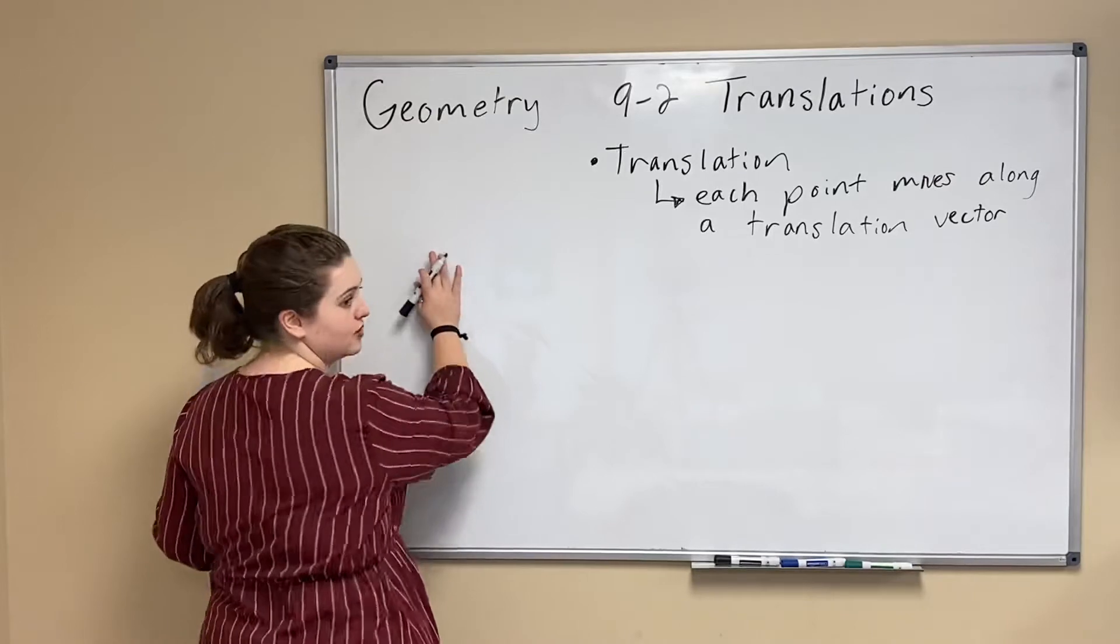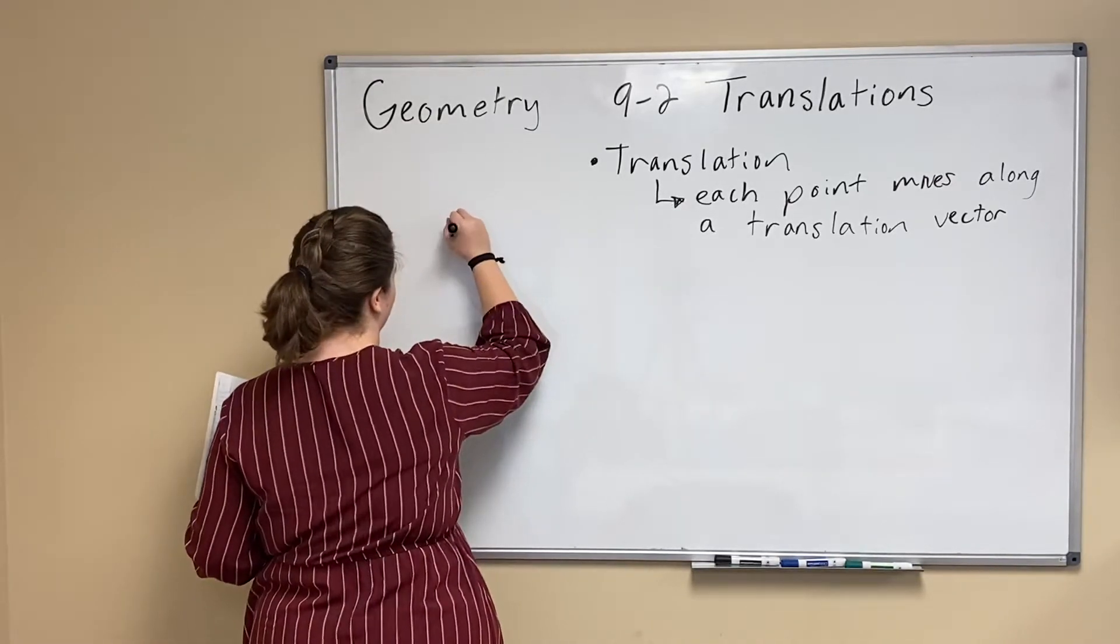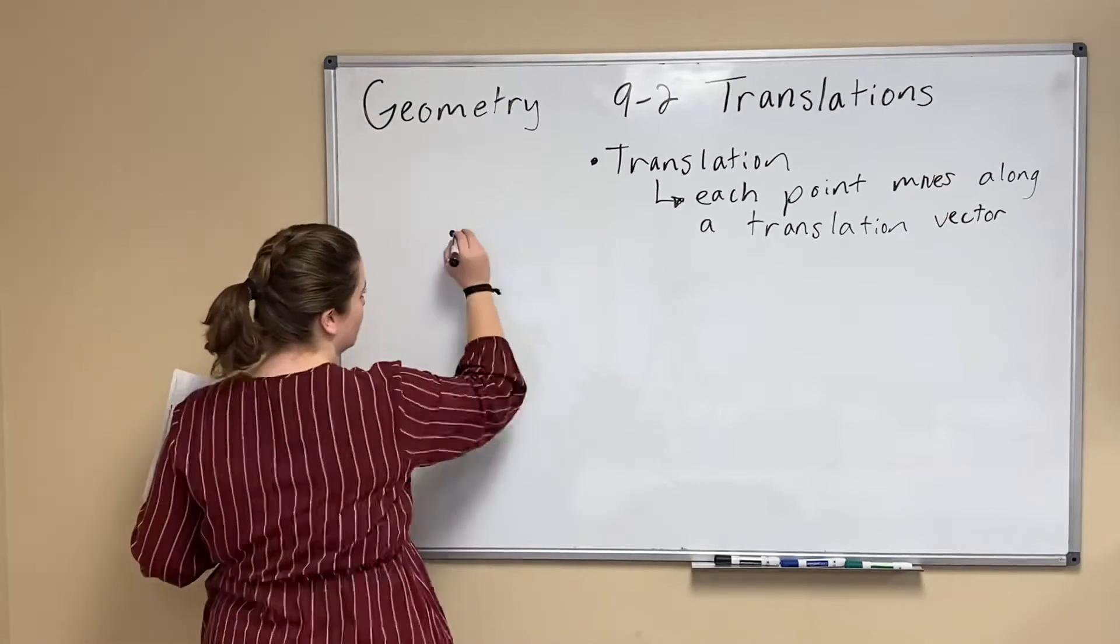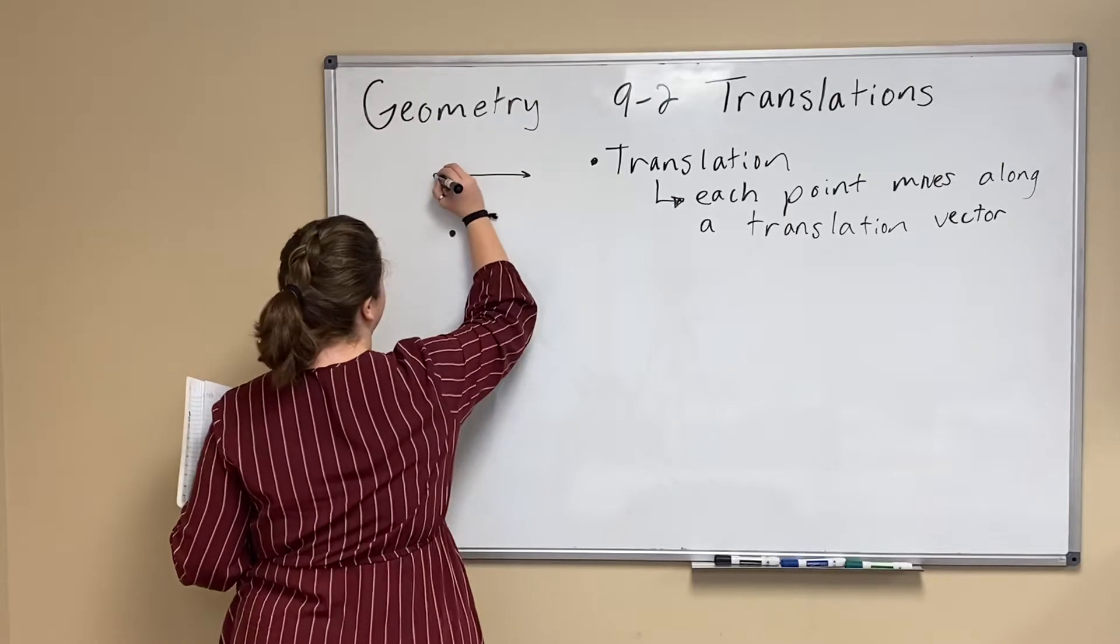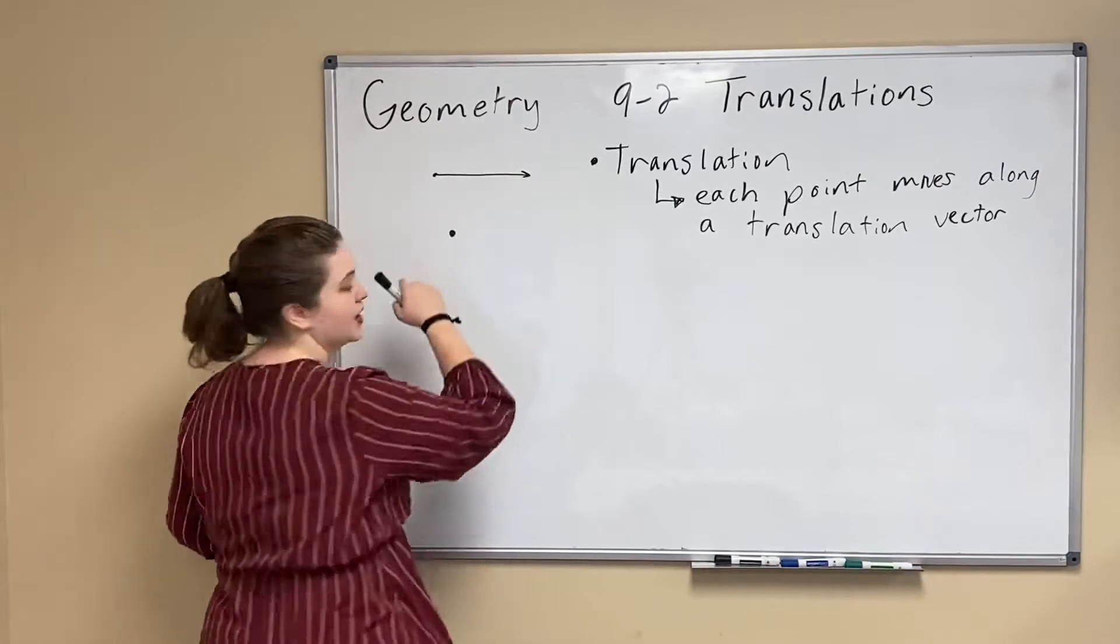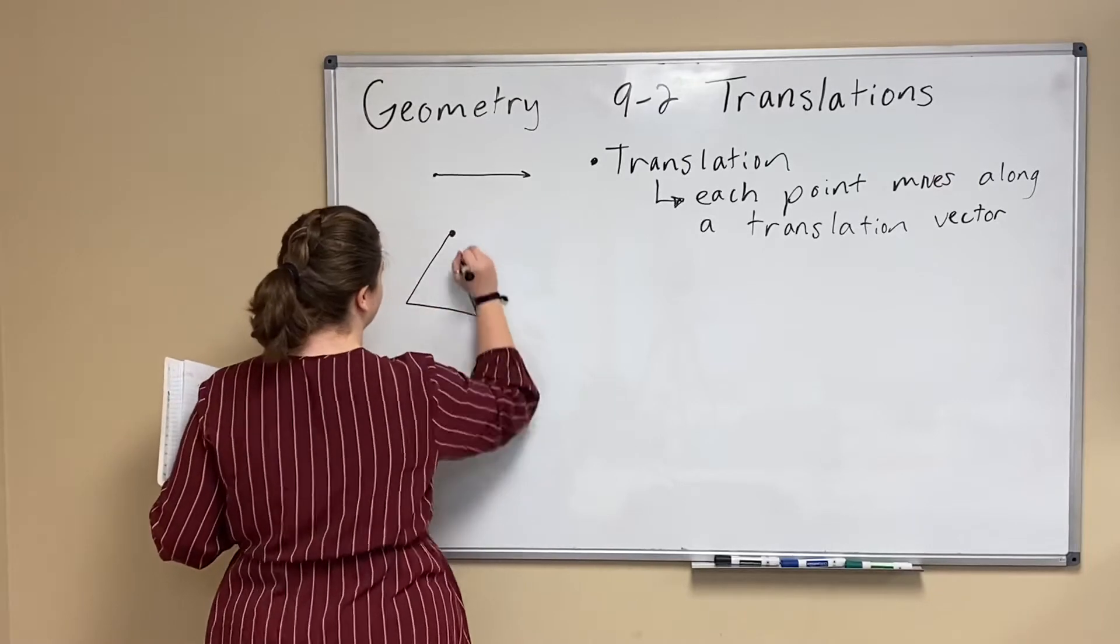So instead of having to measure like yesterday measuring across a line, this time we're taking a point and I'm moving it along a specific vector that's going to be a distance and a direction. So if I took my triangle...